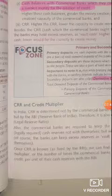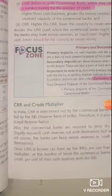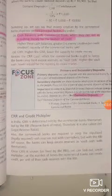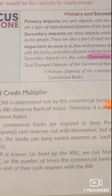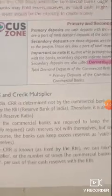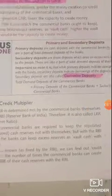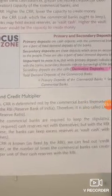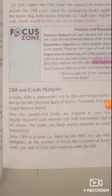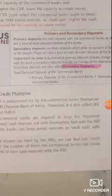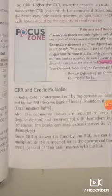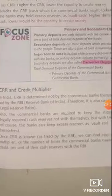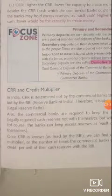Cash Reserve Ratio is the cash which a commercial bank is required to keep with themselves legally, as per RBI instructions. Additionally, commercial banks are required to keep a supplementary cash reserve not with themselves but with the RBI. Banks can also keep excess reserve as vault cash with themselves. Once CRR is fixed by the RBI, we can find out the credit multiplier — the number of times commercial banks can create credit per unit of their cash reserve.